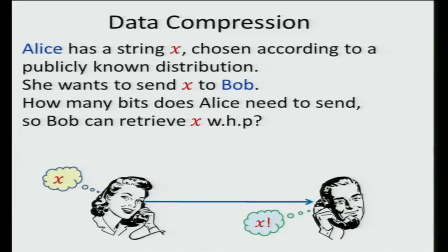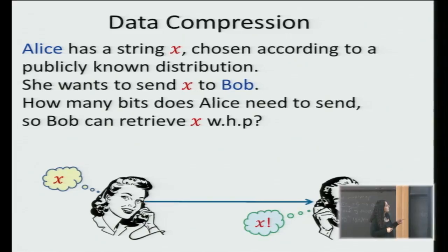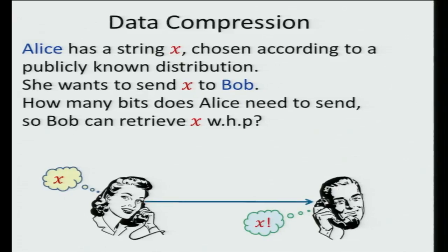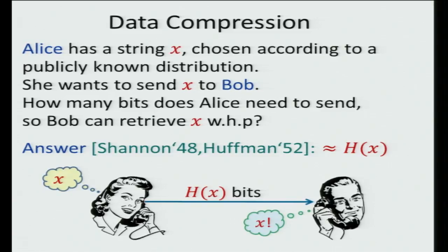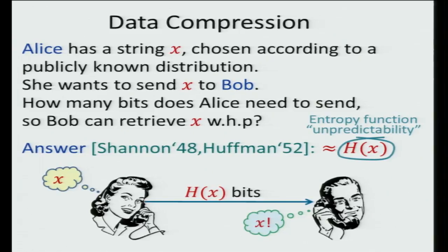The starting point of this paper is the very influential works by Shannon and Huffman about data compression. In data compression we have two players, Alice and Bob. Alice has some string in mind, x, chosen according to some publicly known distribution, and Alice wants to send x to Bob. The question is how many bits does Alice need to send so that Bob will be able to retrieve x with high probability? The answer was given by Shannon and Huffman: Alice needs to send roughly h of x bits, where h is the entropy function measuring the unpredictability in a random variable.